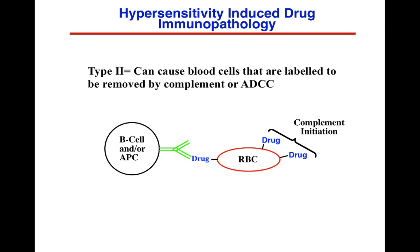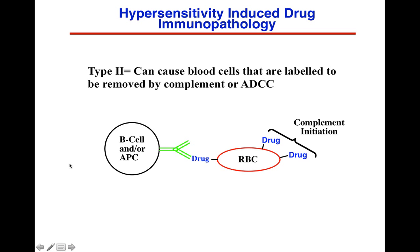Type 2 is based on a mechanism similar to Rh factor reactions. If a drug gets bound to a red blood cell, then B cells and antigen-processing cells could potentially bind to the drug, engulf, and take over that erythrocyte. If drugs are present at multiple regular positions on the erythrocyte, you could also have complement initiation. For the purposes of this class, Type 2 involves antibody produced against the drug, with removal by complement or ADCC. In practice it can be hard to tell whether it's Type 1, 2, or 3 — though Type 4 can be more readily distinguished.